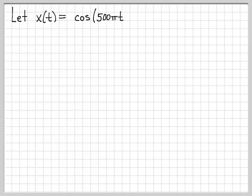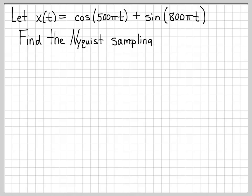In this problem we're going to look at the signal x(t) equals cosine 500π t plus sine 800π t. And like we've done for the last few problems, we're going to compute the Nyquist sampling rate of this signal. So our goal here is to compute f_Nyquist.